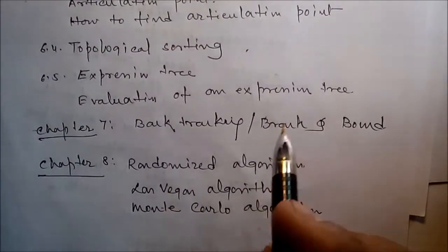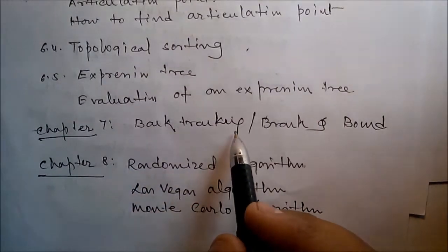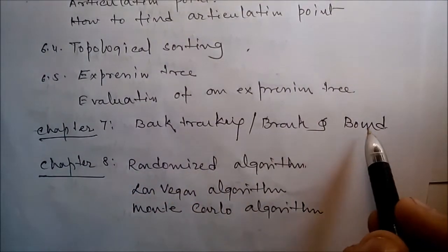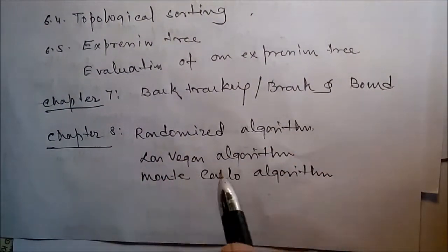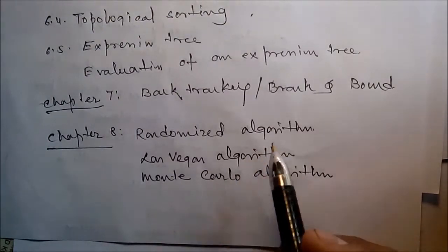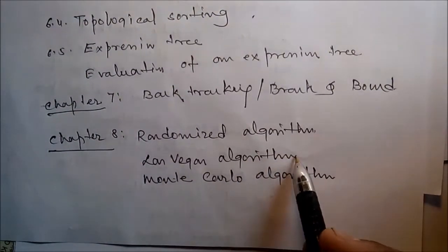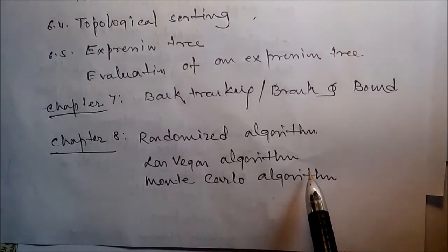Chapter 7 covers an introduction to backtracking and branch and bound. Finally, in Chapter 8, we'll talk about randomized algorithms — what is the Las Vegas algorithm and what is the Monte Carlo algorithm.